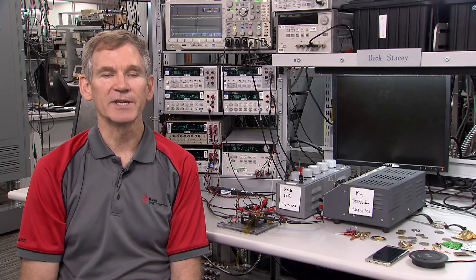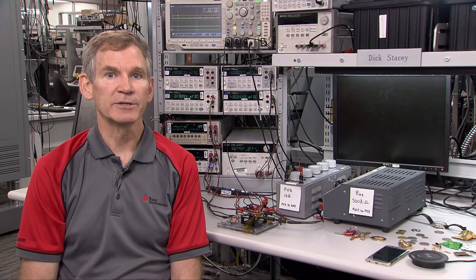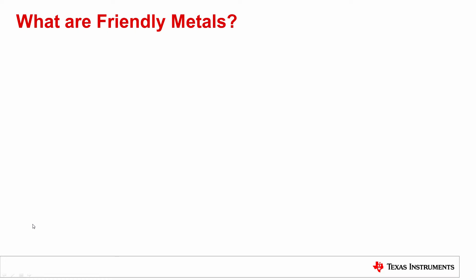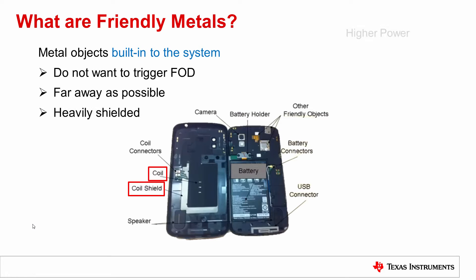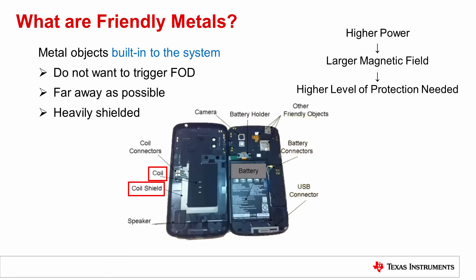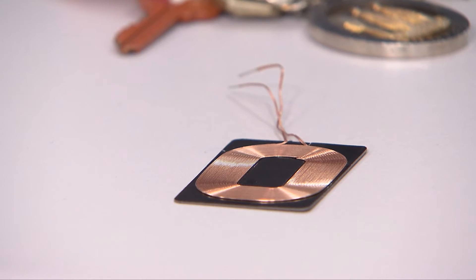Calibration is required by the receiver system to ensure it sends the correct power level to the transmitter, and to account for any expected friendly metal losses. Examples of friendly metals include cameras, speakers, batteries, screws, and connectors. The receiver coil shielding is not only used to direct the magnetic field to the coil, but also to block as much magnetic field from impacting friendly metals as possible.